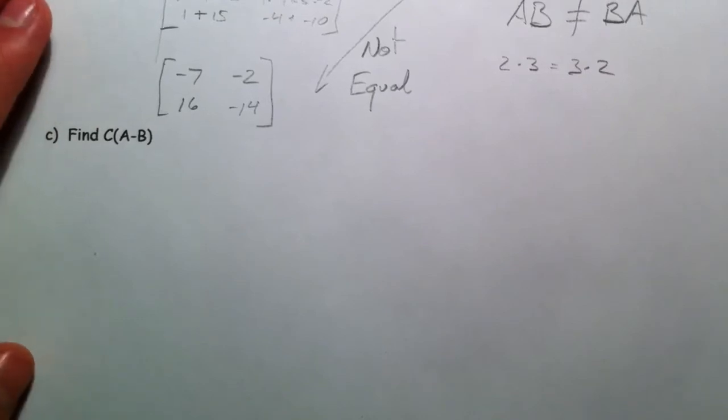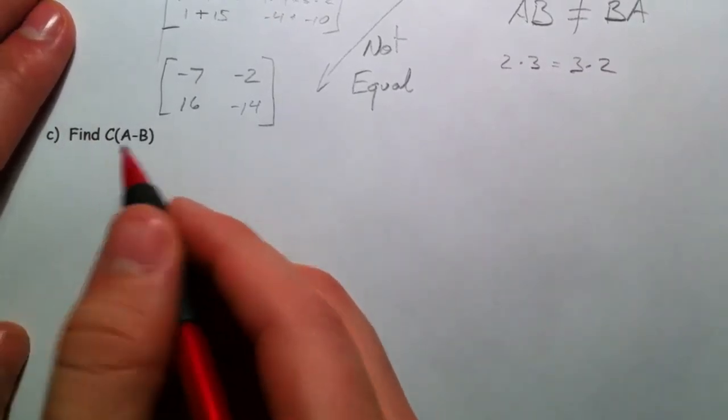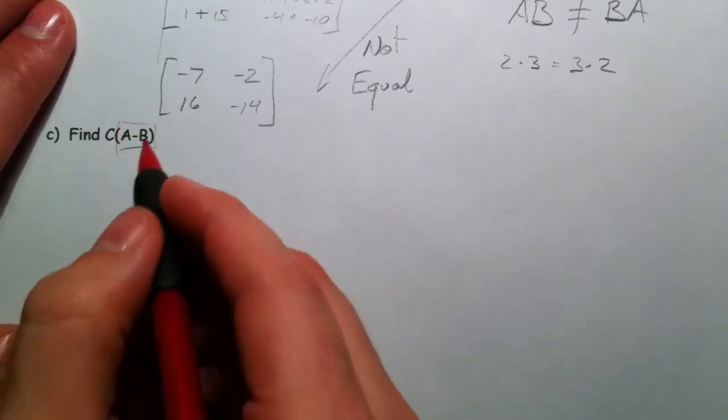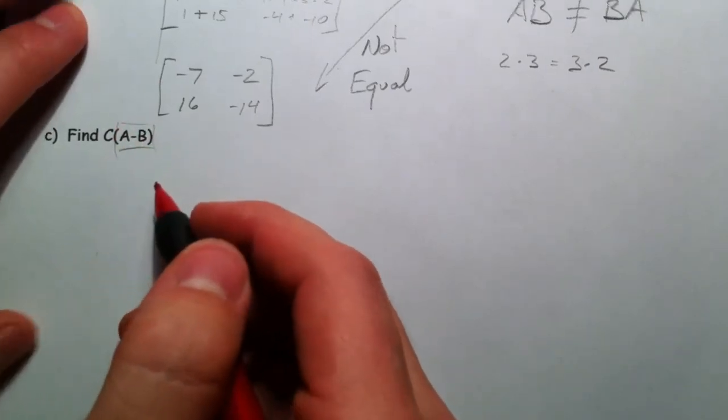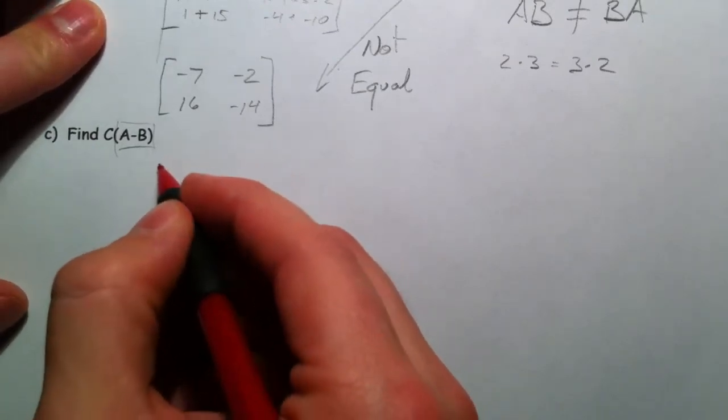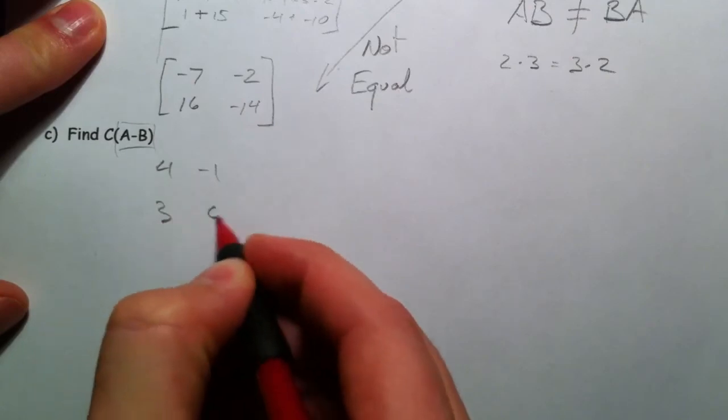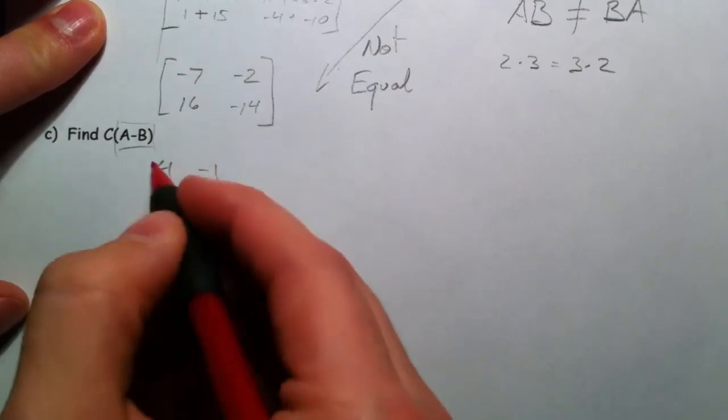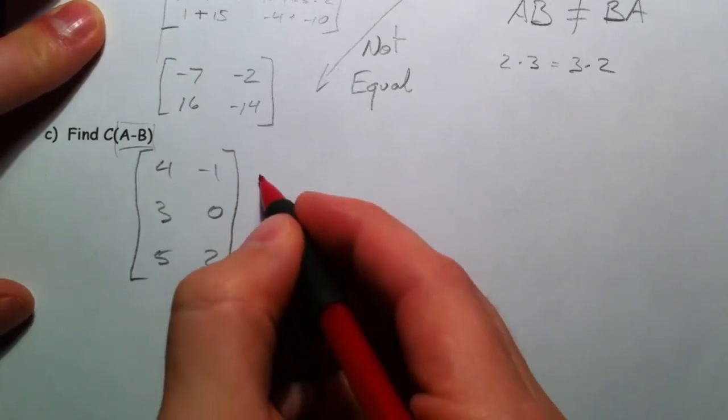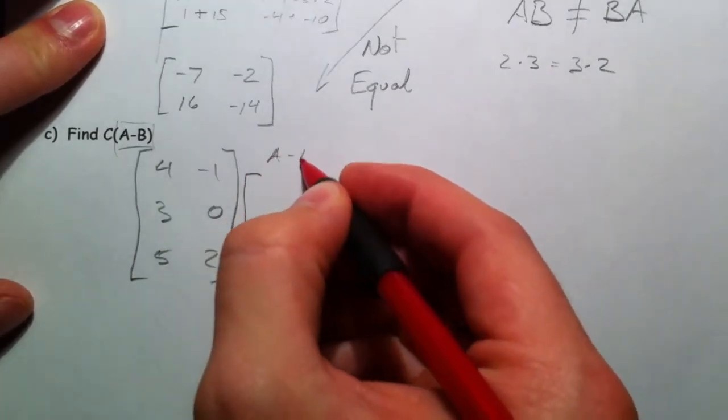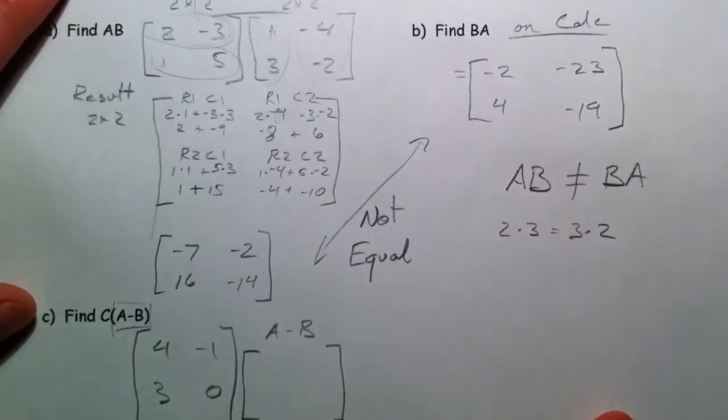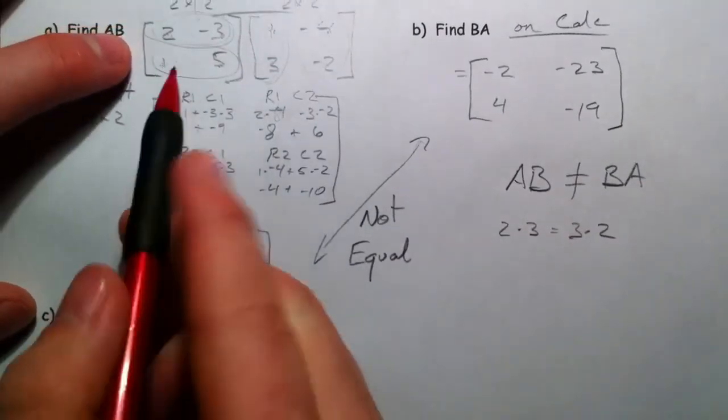So finally let's do C times A minus B. And so, again, do this stuff in parentheses first. So C is going to be 4, negative 1, 3, 0, 5, 2. And then I'm going to multiply that by A minus B. And I'm going to actually subtract that before we get in here.